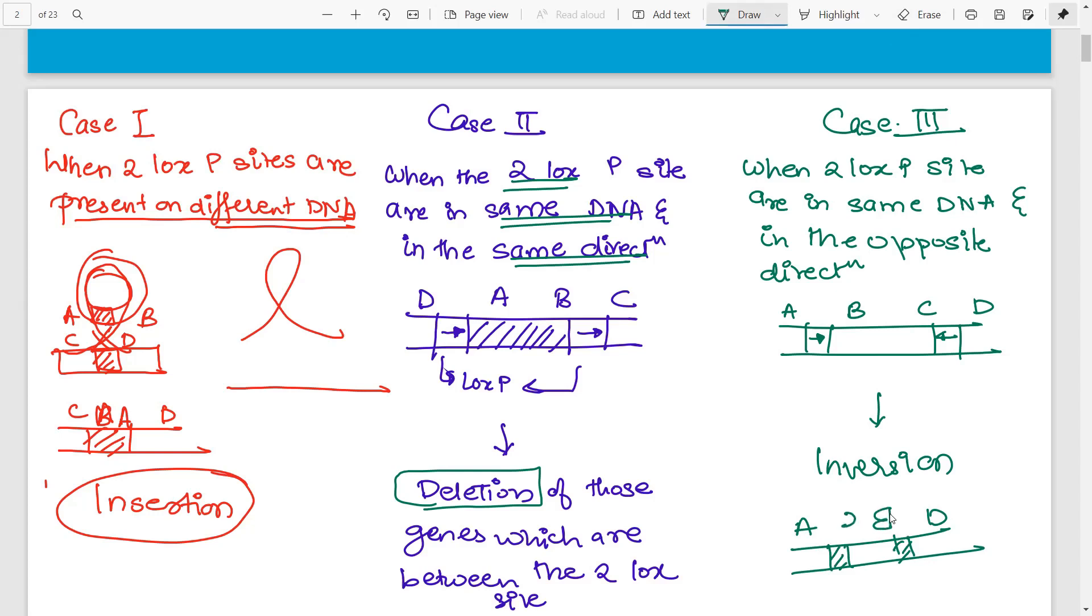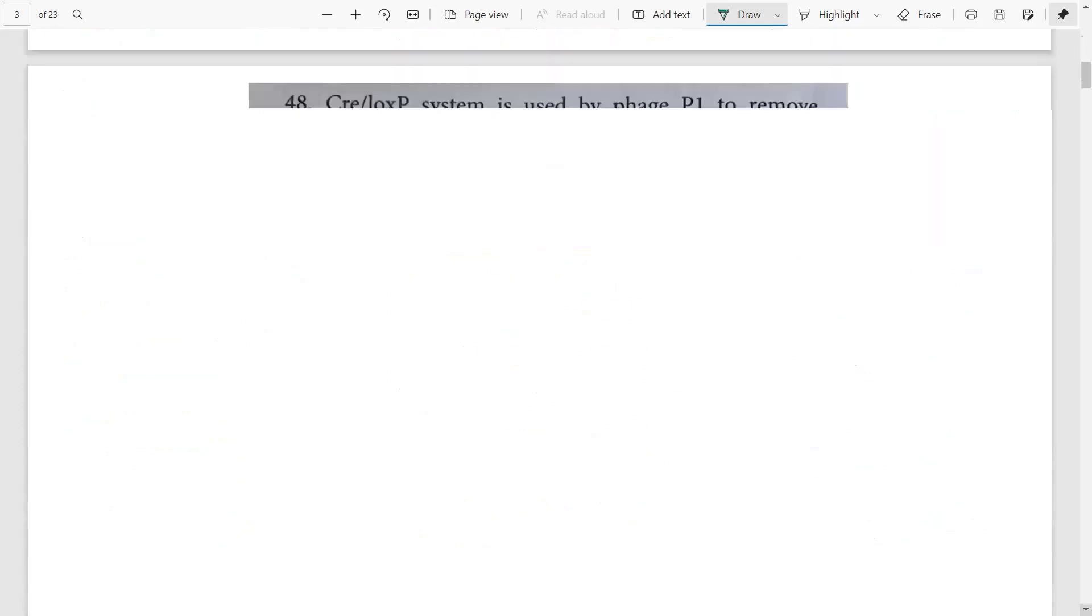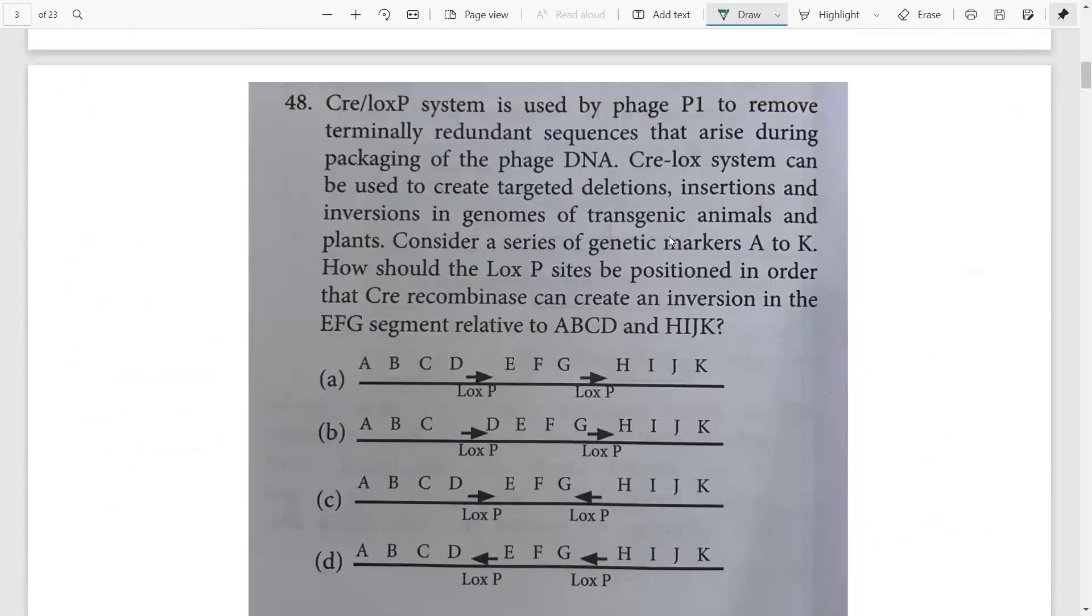This is the three cases. Just this much information is more than enough to solve all questions on CRE-LOX systems. Let's have a look. This is a question asked in CSIR NET. The CRE-LOX system is used by phage P1. It can be used to carry out deletion, insertion, inversions in animals as well as plants. Consider genetic markers A to K.